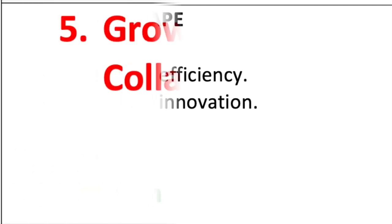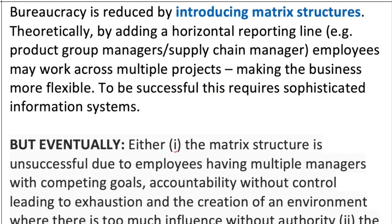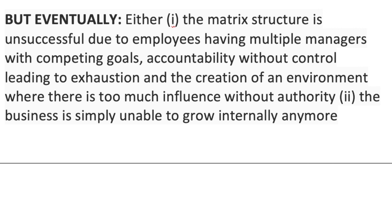Growth through coordination means increased coordination leads to a more centralized structure. Finance may be held centrally and allotted to each area, and formal procedures are put in place. This works to an extent, but coordination eventually leads to bureaucracy — growth becomes stifled because employees must adhere to formal procedures and wait for finance from the central board. This leads to the crisis of red tape, where too much bureaucracy results in reduced efficiency and reduced innovation.